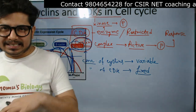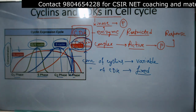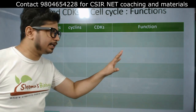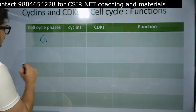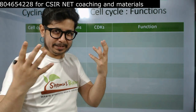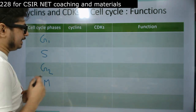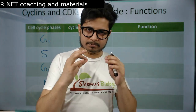Now we'll move to understanding which cyclin and which CDK partner work together in which phases of the cell cycle. We'll write down the different phases — G1, S, G2, M — and also write down the cyclin and CDK associated with each phase and their respective functions. I have a small mnemonic — a trick for you to remember — because there are different cyclins and CDK partners, and biology requires you to remember many things.